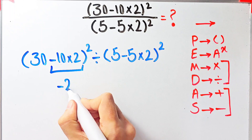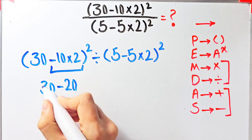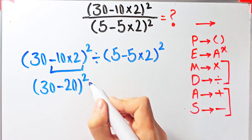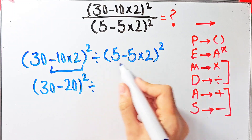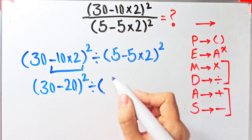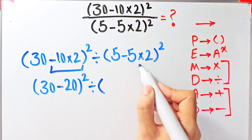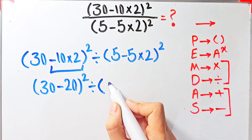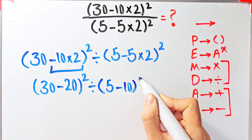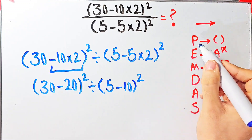10 times 2 equals 20, so we get 30 minus 20, then to the power of 2, divided by the second parentheses. Inside the second parentheses, we also do the multiplication first: 5 times 2 equals 10, giving us 5 minus 10, all to the power of 2.